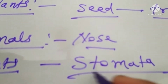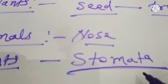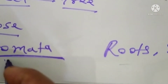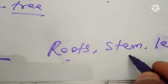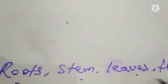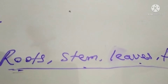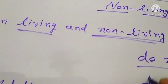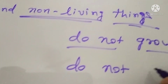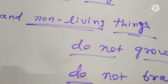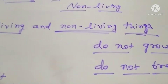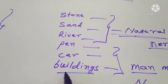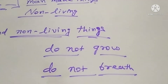Stomata are present all over the plant's parts — the roots, stem, leaves, and flowers. Through these parts, plants breathe. Non-living things do not breathe. Non-living things like pen, car, buildings, sand, stone, and river — these do not breathe.